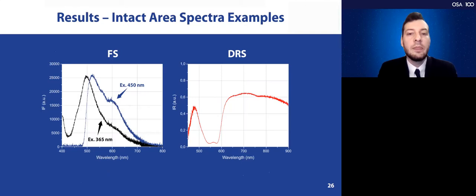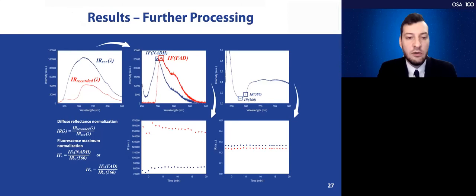For the assessment of fluorescent spectroscopy and diffuse reflectance spectroscopy, here are the examples of the intact area from the baseline tests. Then the results were processed with the specific reflectance normalizations in accordance to the algorithms that are given in this slide.